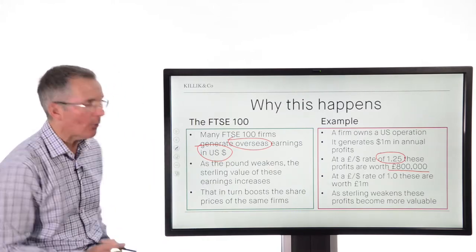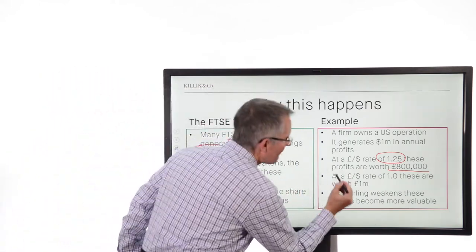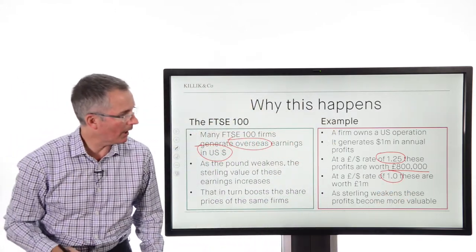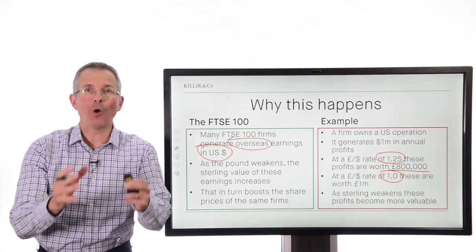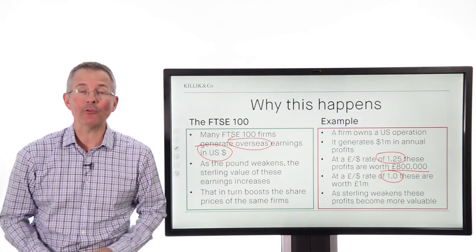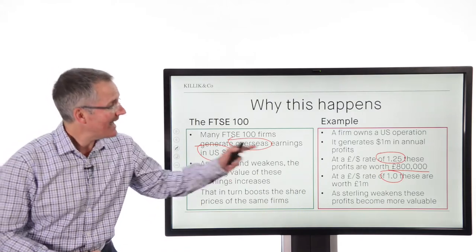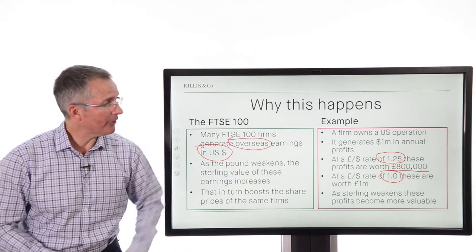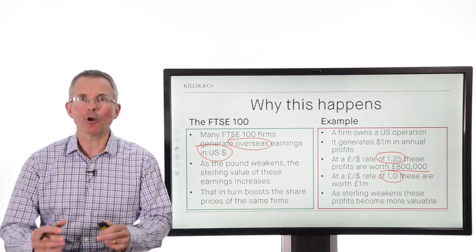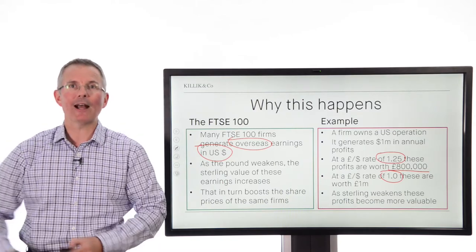Now notice something. If the pound were to weaken such that it buys fewer dollars — so if the pound-dollar exchange rate were to drop to one, so now each pound only buys one dollar — then suddenly, if you translate a million dollars back at one-to-one, you get a million pounds. And that's more, to put it bluntly, than £800,000. So that, for no extra work on behalf of the company, simply a foreign exchange movement, is a gain. You can see that as sterling weakens, or the dollar strengthens, those same profits are getting more valuable, and that translates through into share prices and into the value of the index.